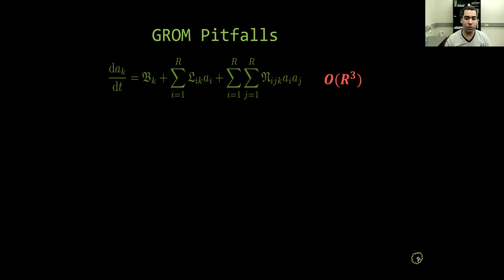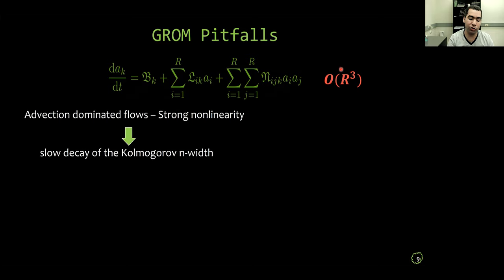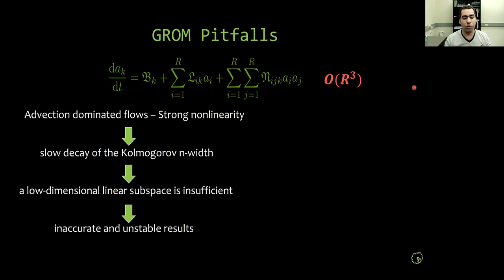Now the thing is that for most flow field applications, the cost of solving this GROM becomes the order of R cubed, which means that we need to maintain or keep this R as small as possible. And actually, this works pretty well for some systems. But for other systems, especially those dominated by convection or advective mechanisms with strong nonlinearity, we find that these systems exhibit a slow decay in what you call the Kolmogorov n-width, which is just a fancy phrase that means that a low dimensional linear subspace like the ones that we are using now in this study becomes insufficient to capture the main dynamics of your system.